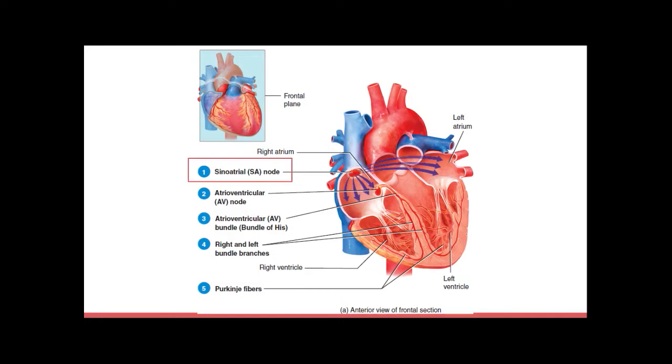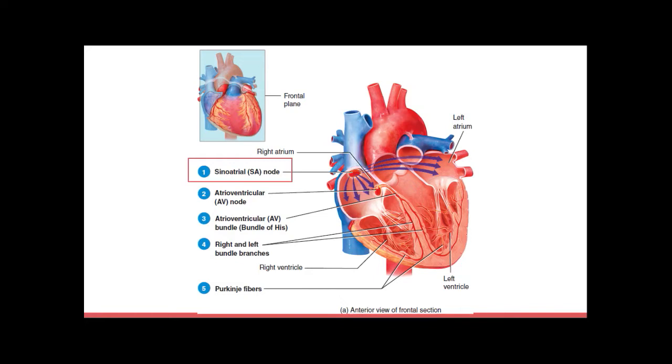So spontaneous depolarization is called pacemaker potential. So the SA node or the sinoatrial node is also known as the pacemaker. And I'm going to show you this nice little graph really quickly. So pacemaker potential is in green. And you can see it reaches a threshold and then automatically goes through the action potential.